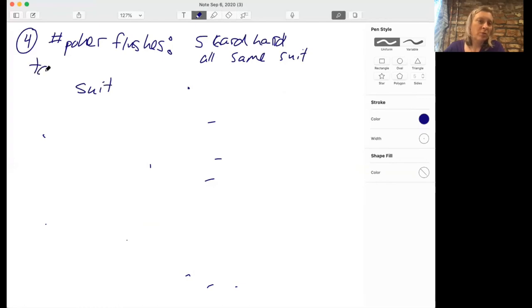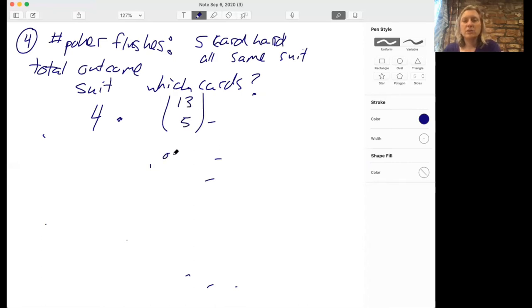So what's the suit? Well, there are four options for that. And then which cards in the suit? Well, then out of those 13 cards, we need to choose five. And here this already implicitly says that order doesn't matter among the five. So this is, I think, the best way of doing this problem. And then you can write down what the answer is very quickly. It's 4 times 13 factorial over 5 factorial times 8 factorial.